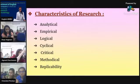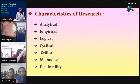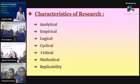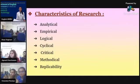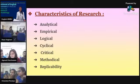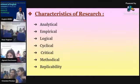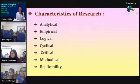Fourth is cyclical — research starts with a problem and ends with a problem. Fifth is critical — research exhibits careful and precise judgment. Sixth is methodical — research is conducted in a methodical manner without bias, using systematic methods. Seventh is replicability — research designs and procedures are repeated to enable the researcher to arrive at valid and conclusive results.